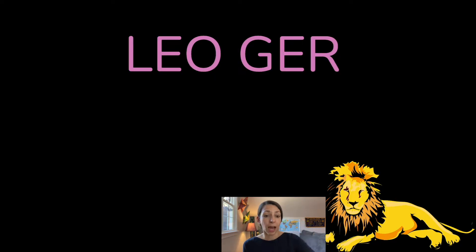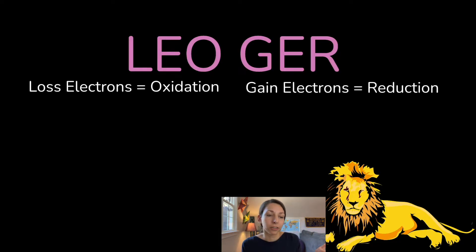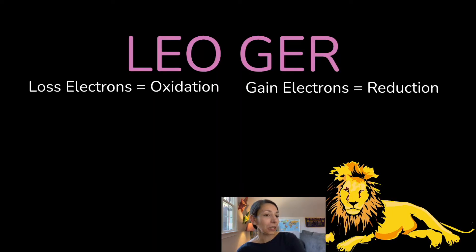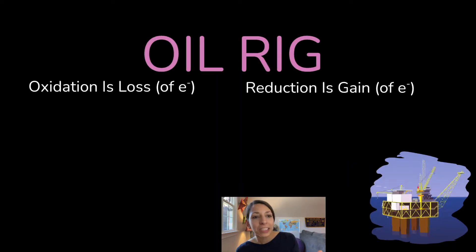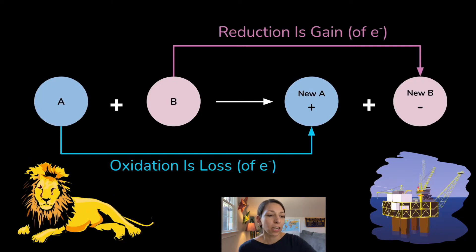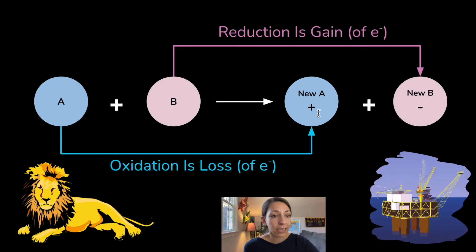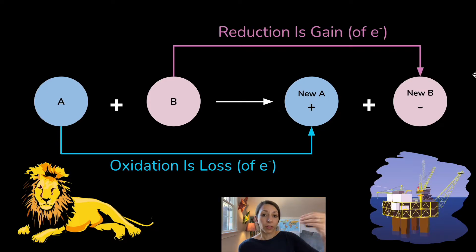A lot of students get redox reactions confused — it's a tricky topic even in chemistry. One mnemonic to remember it is LEO-GER: loss of electrons is oxidation, gain of electrons is reduction. You can also say OIL RIG: oxidation is loss, reduction is gain. In our equations, after the chemical reaction, substance A will lose electrons and become increasingly positive, while substance B gains electrons and becomes increasingly negative, because the more electrons a substance has, the more negative charge it carries.